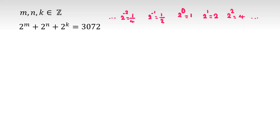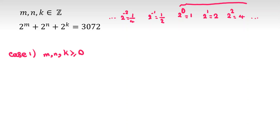Here we have 2 to the m, 2 to the n, 2 to the k equal to 3072. In Case 1, I consider the powers are at least 0, so I can work with integers. Suppose m, n, k are all at least 0, so 2 to the m plus 2 to the n plus 2 to the k equals 3072.